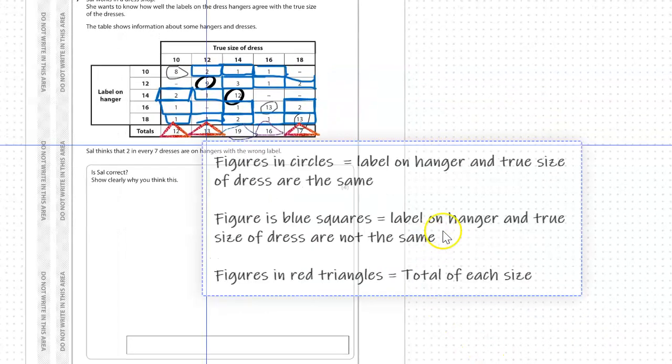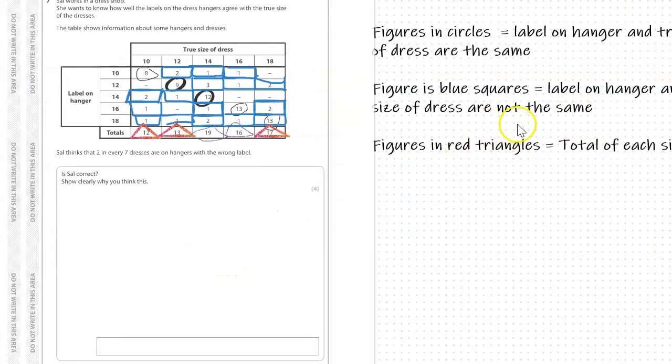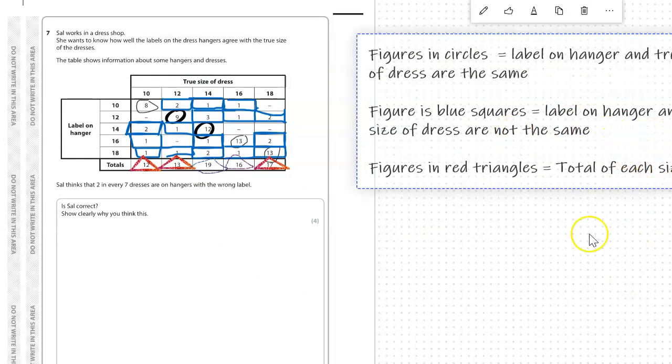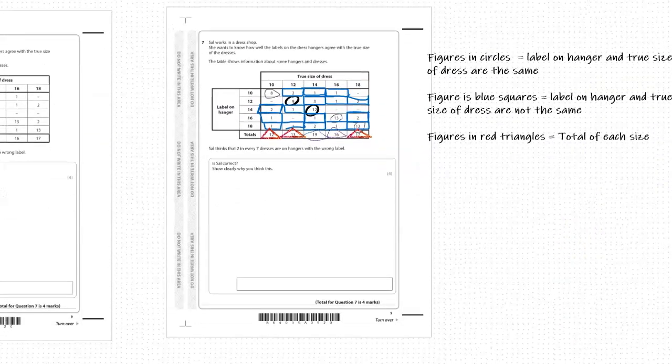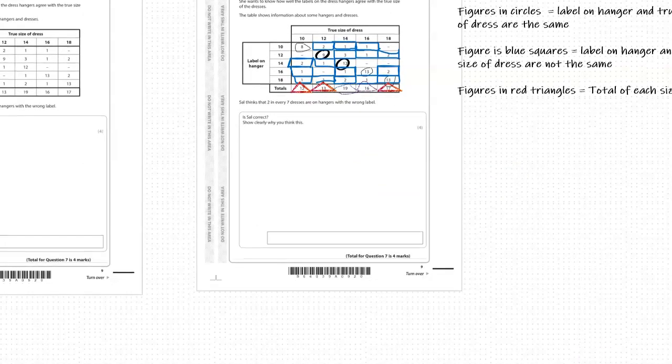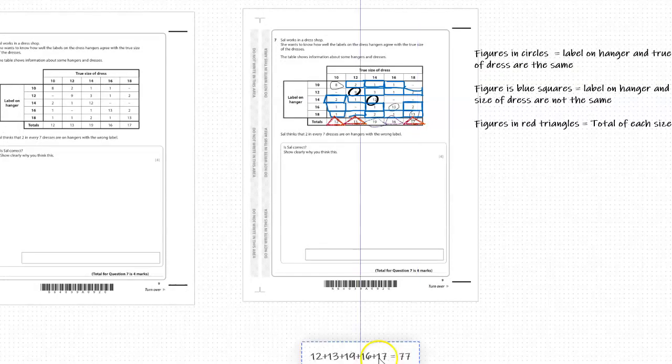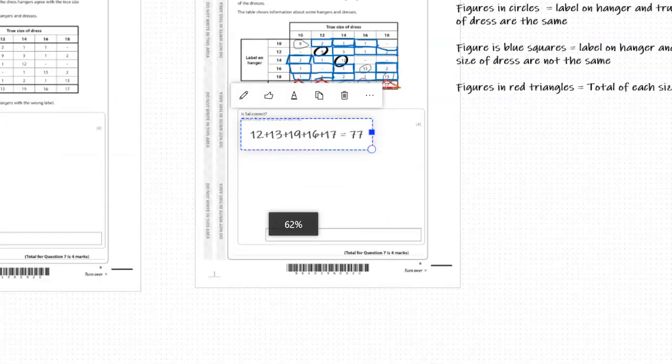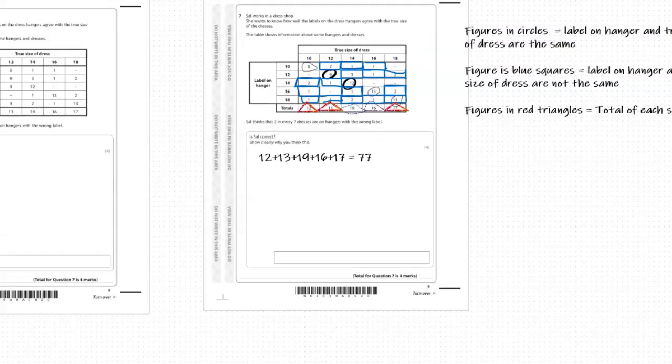Now I've annotated the table, we can start getting some figures from that. Let's go for the totals because we're going to need that no matter what. The totals are the bottom row there. Adding those all together: 12 plus 13 plus 19 plus 16 plus 17, there are 77 dresses in total.